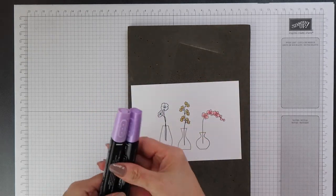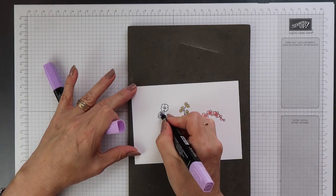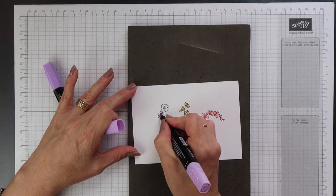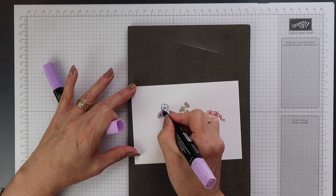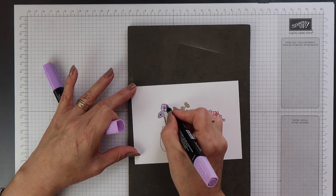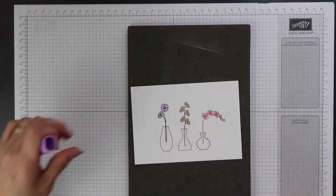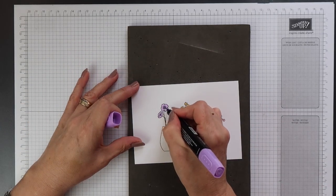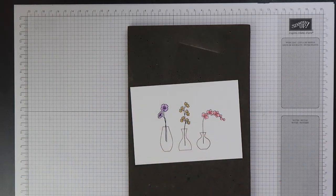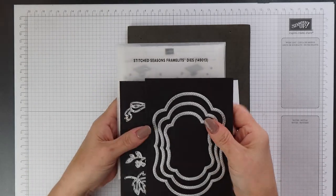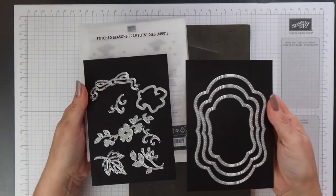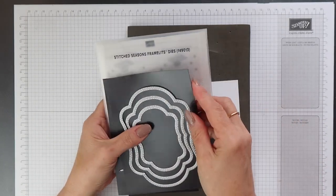Finally for the flower on the left I'm going to use my Highland Heather blends. So I'll start with my light and I'll cover the whole area and then I'll just use the dark in the centre of each flower. To cut this out I'm going to use the largest framelit in the Stitched Seasons set.